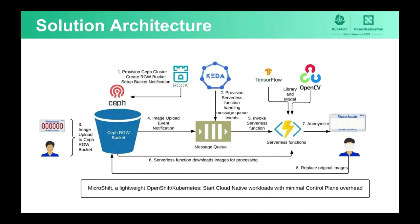Here is the high-level overview of our solution architecture. We use mostly CNCF projects, namely Rook and KEDA. Rook is the infrastructure orchestrator. We use Rook to create a cluster, create an RGW bucket, and enable the bucket notification mechanism, so activities within the buckets are pushed to the message queue endpoint. We use KEDA as a service framework for our execution engine.